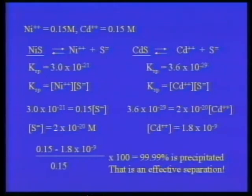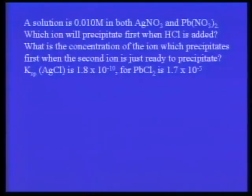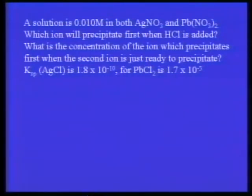That was a very effective separation. There won't be enough cadmium ion left to interfere with nickel. Now here is a good problem: you have a solution that is 0.010 molar in both silver nitrate and lead nitrate. We want to know which ion precipitates first when HCl is added, and what is the concentration of the first ion when the second ion is just ready to precipitate.